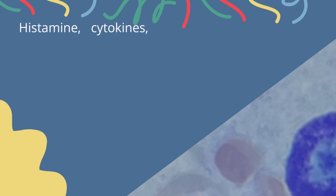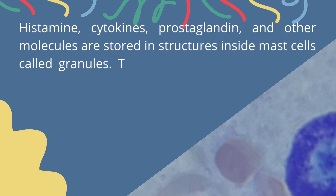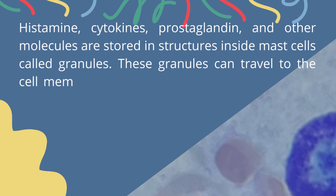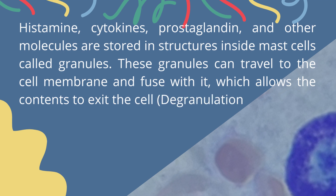Histamine, cytokines, prostaglandins, and other molecules are stored in structures inside mast cells called granules. These granules can travel to the cell membrane and fuse with it, which allows the contents to exit the cell.